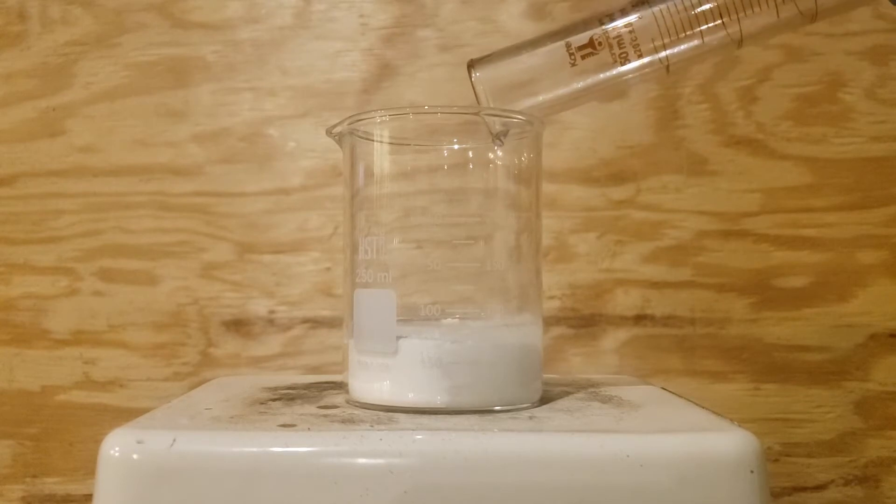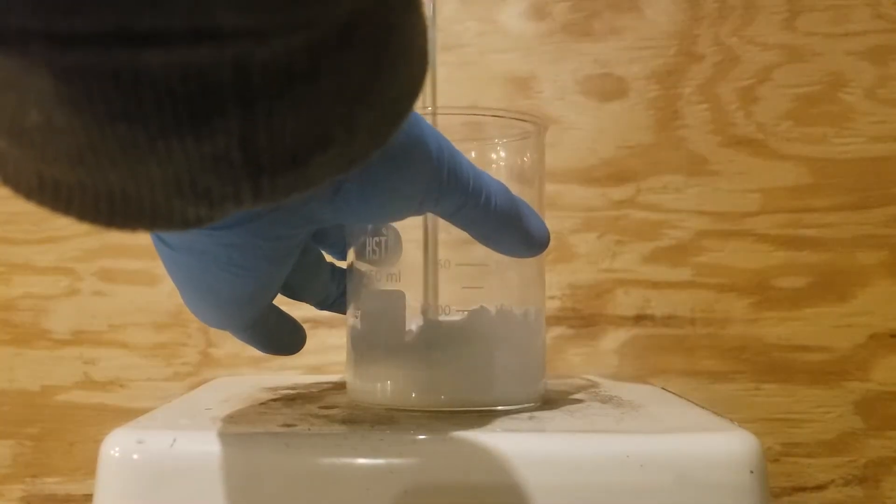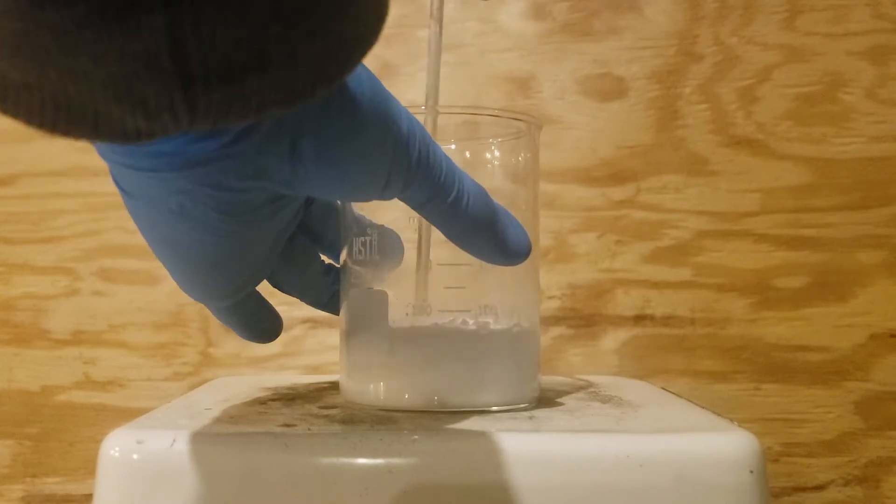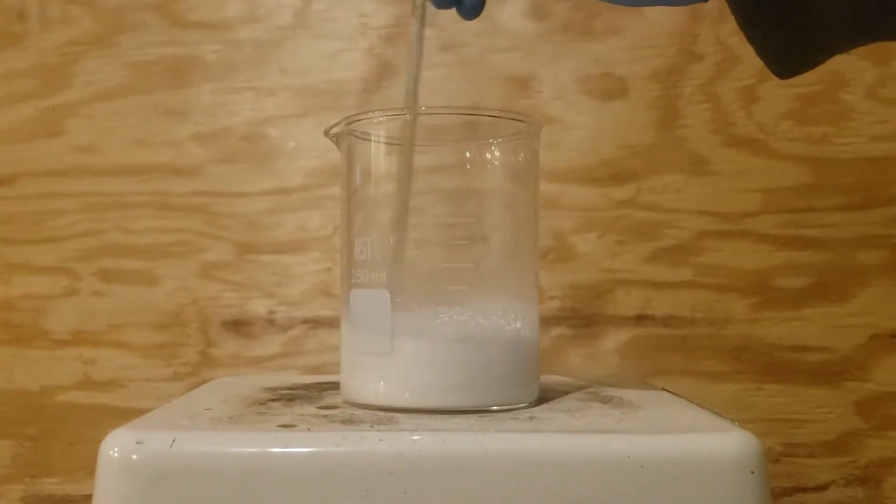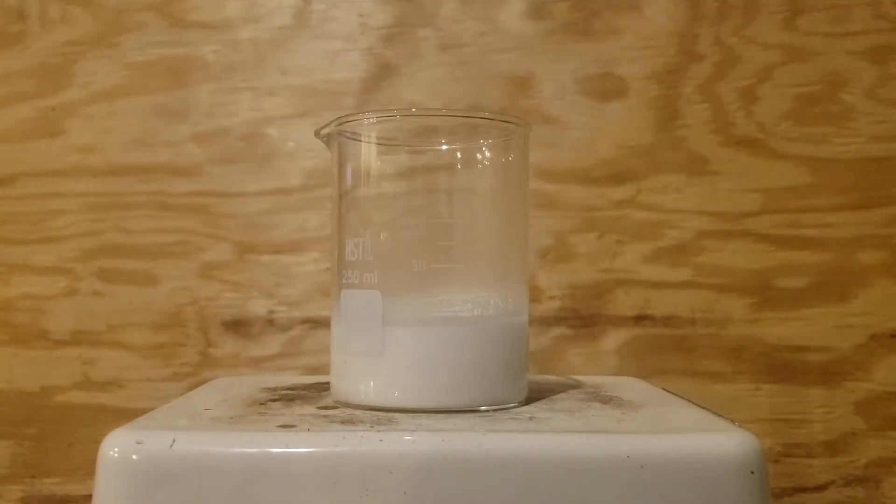I then broke up the solidified sodium tetraborate in the beaker and began stirring it around with a glass stir rod. Eventually, this freed up the mixture enough to where everything could start stirring automatically.